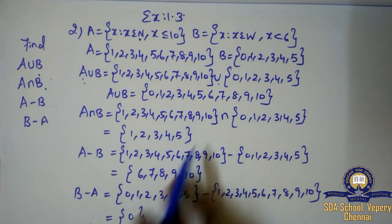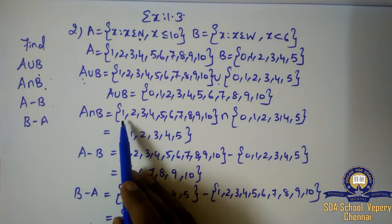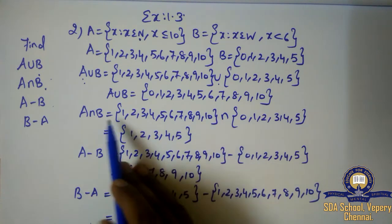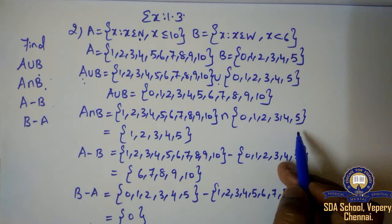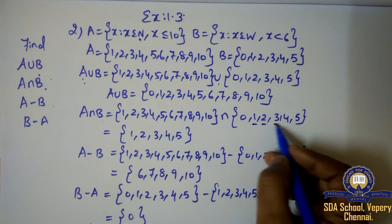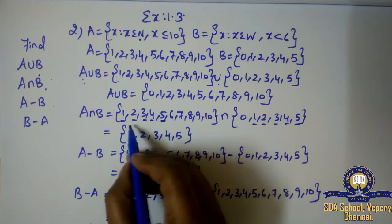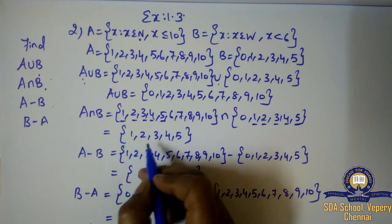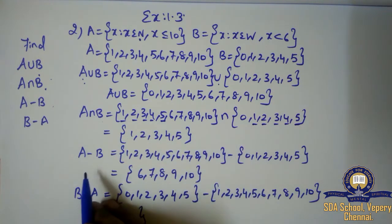Next is A intersection B. Instead of A I have written 1 to 10, intersection symbol, then instead of B I have written 0 to 5. Intersection means finding common elements. The common elements in both A and B are 1, 2, 3, 4, 5. So the answer for A intersection B is {1, 2, 3, 4, 5}.